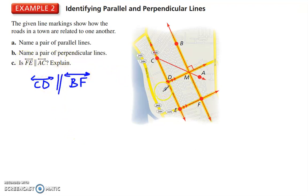Name a pair of perpendicular lines. We have perpendicular lines. Let's go to CE this time. Let's go to CE this time. CE is perpendicular. This actually looks like it's a ray here.